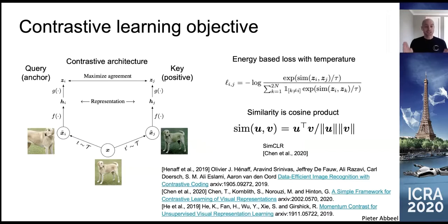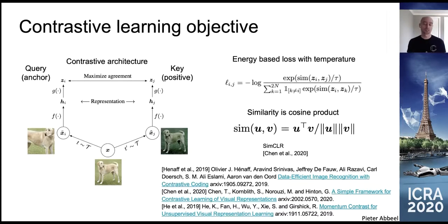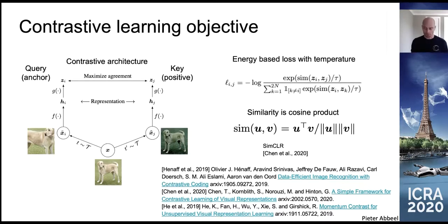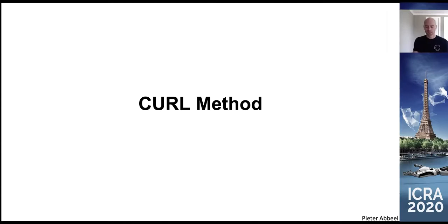Neural networks encode these augmented images into latent vectors zi and zj. Contrastive learning then says that since these two latent vectors came from augmentations of the same image, they should agree — more specifically, they should have a high inner product, in contrast to inner products with embeddings from other images. The equation shows we want to maximize agreement in the numerator via the inner product of zi and zj, normalized by negative examples in the denominator where we want small similarity. Very simple idea, very powerful.